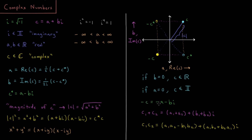The negative of a complex number is negative a minus bi. To add two complex numbers, we add their real components and add their imaginary components separately. To multiply two complex numbers, we use FOIL — first, outside, inside, last. The result has real part a1·a2 minus b1·b2, and imaginary part a1·b2 plus b2·a1 times i.